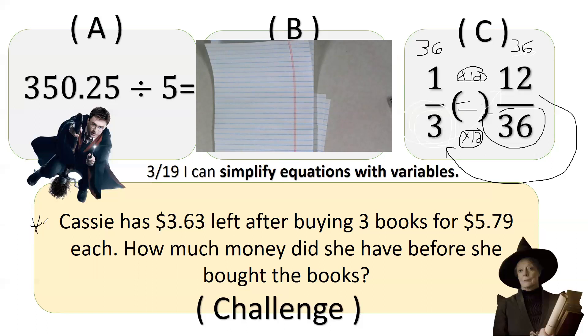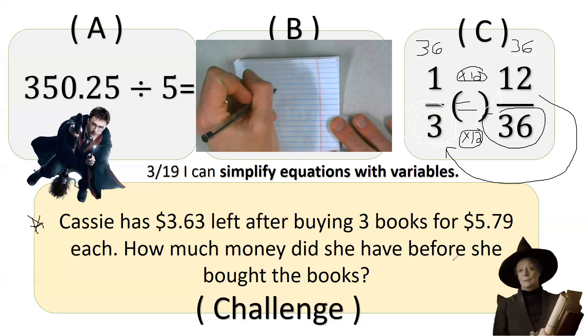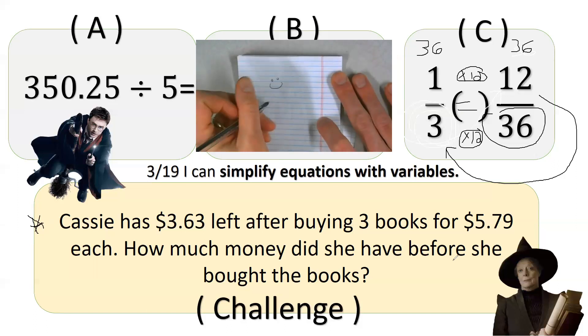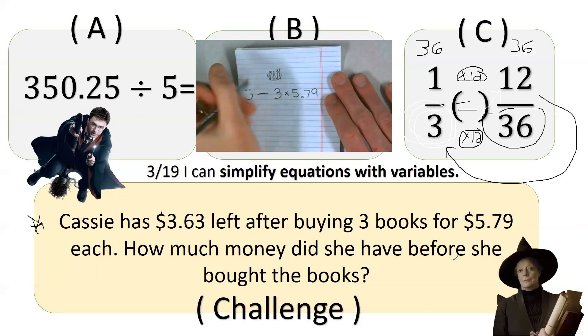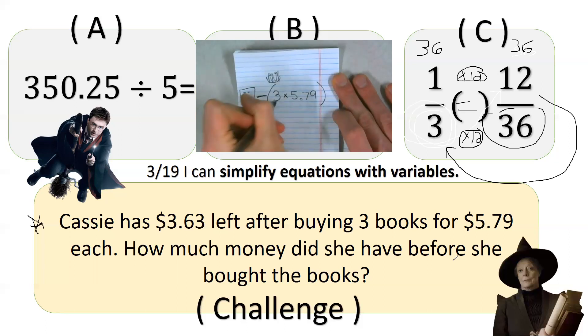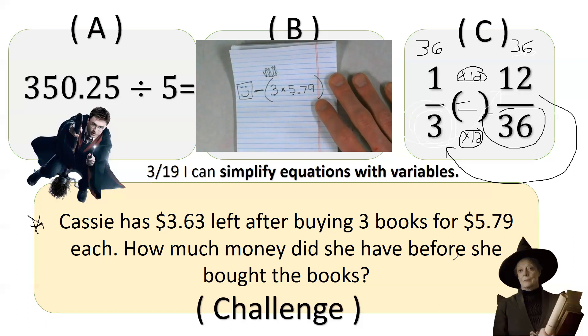And now, last but not least, we have Casey. Casey has $3.63 left after buying three books. So she bought three books, and then after you subtracted three books, so she had something. We'll call it a smiley face. She had a smiley face. She lost. She took away three times $5.79. Why? Because each book was $5.79. So we got to figure out what she had first. Let me put my smiley face there.